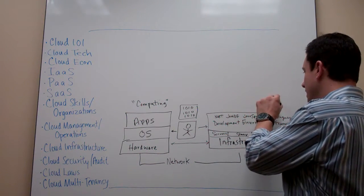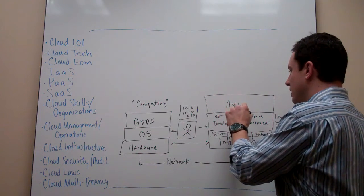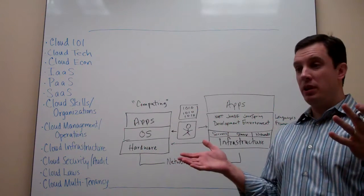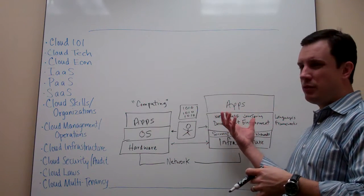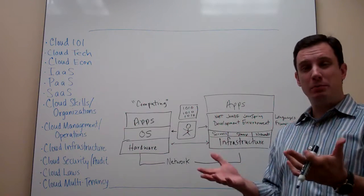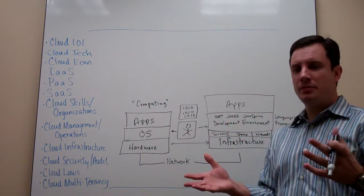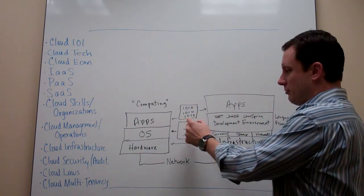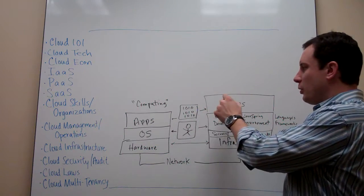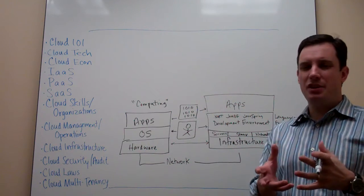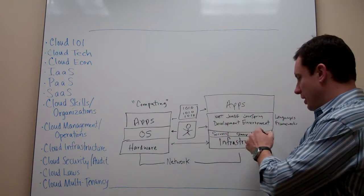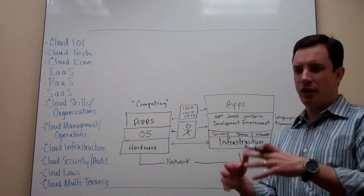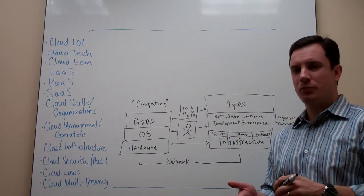The third thing we have within any cloud computing environment is applications. These applications could be legacy types of applications that have been ported to these new environments, or they could be new applications written to be distributed. The applications are the way that our users — whether individual human users or machine to machine — are going to interact with the application, and more importantly, they're going to interact with the data that lives down in the infrastructure somewhere, whether that's on a server, in a storage array, or somewhere else.